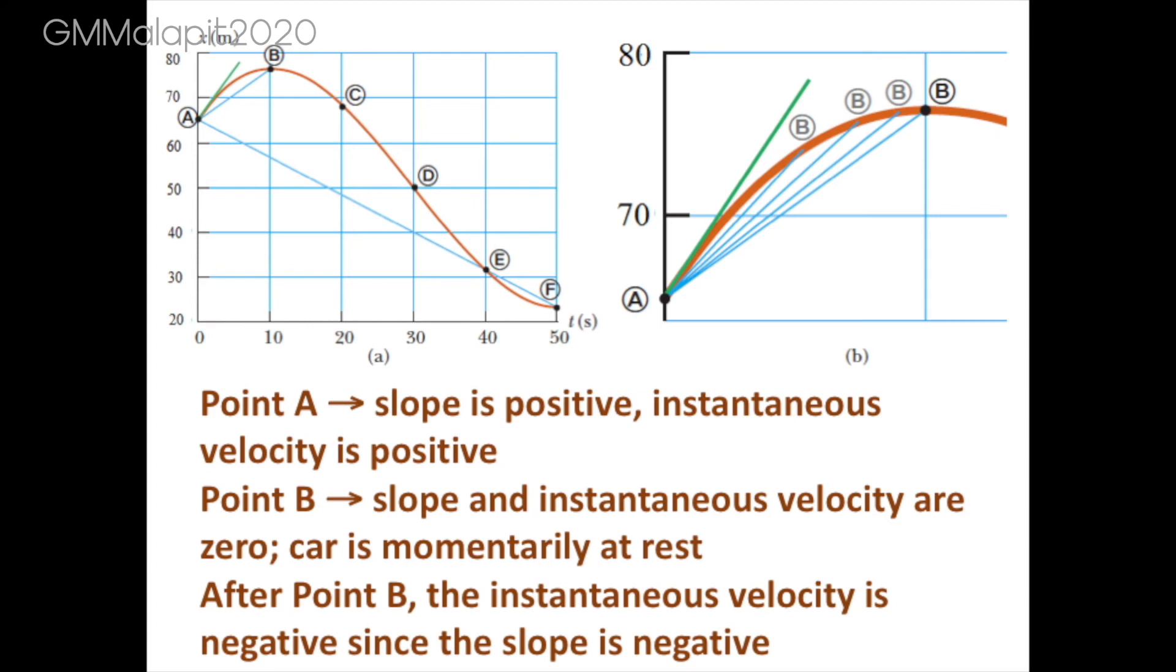After point B, the instantaneous velocity is negative since the slope is negative and the car is moving in the smaller values of x.